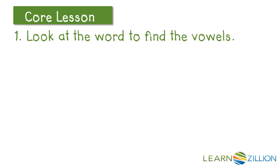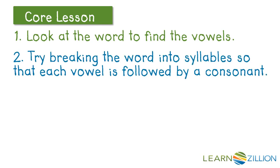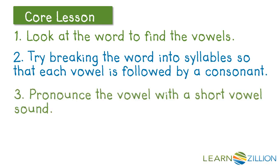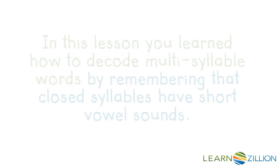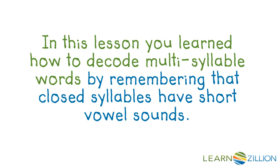So we looked at the words to find the vowels. We tried breaking the word into syllables so each vowel is followed by a consonant. We pronounced the vowel with a short vowel sound, and if it didn't sound right, we could pronounce the vowel with a long vowel sound. In this lesson, you learned how to decode multi-syllable words by remembering that closed syllables have short vowel sounds.